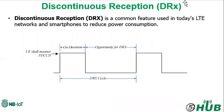Before talking about extended discontinuous reception and how it works, we will talk about DRX, or discontinuous reception. The main purpose of DRX is to lower battery consumption where there is no uplink or downlink data, and this is a common feature used in today's LTE network and smartphones to reduce power consumption.